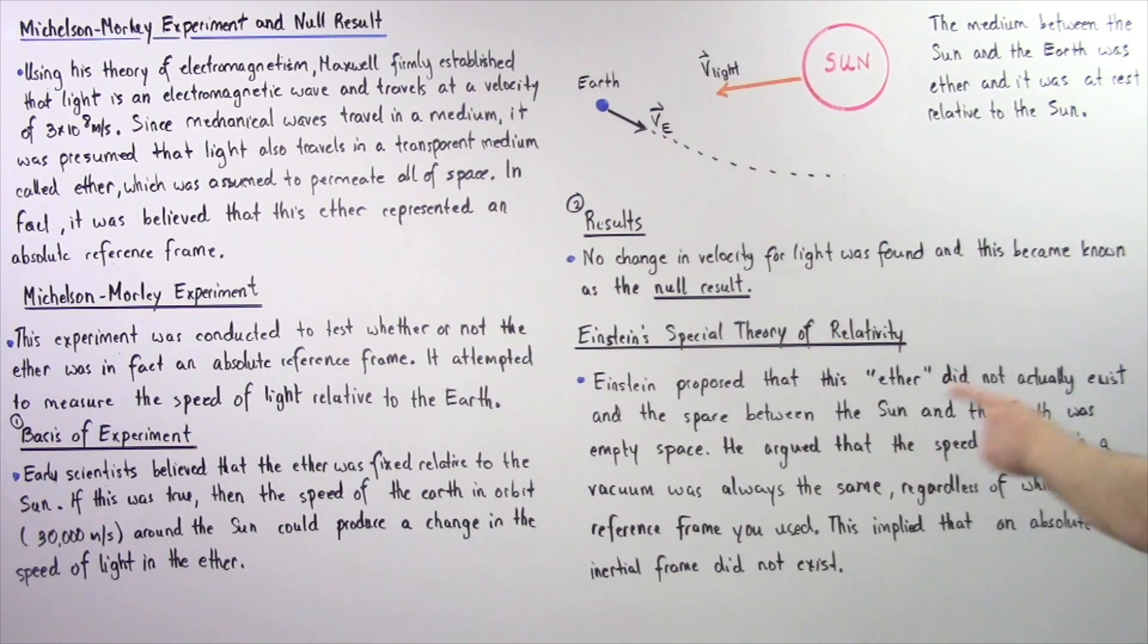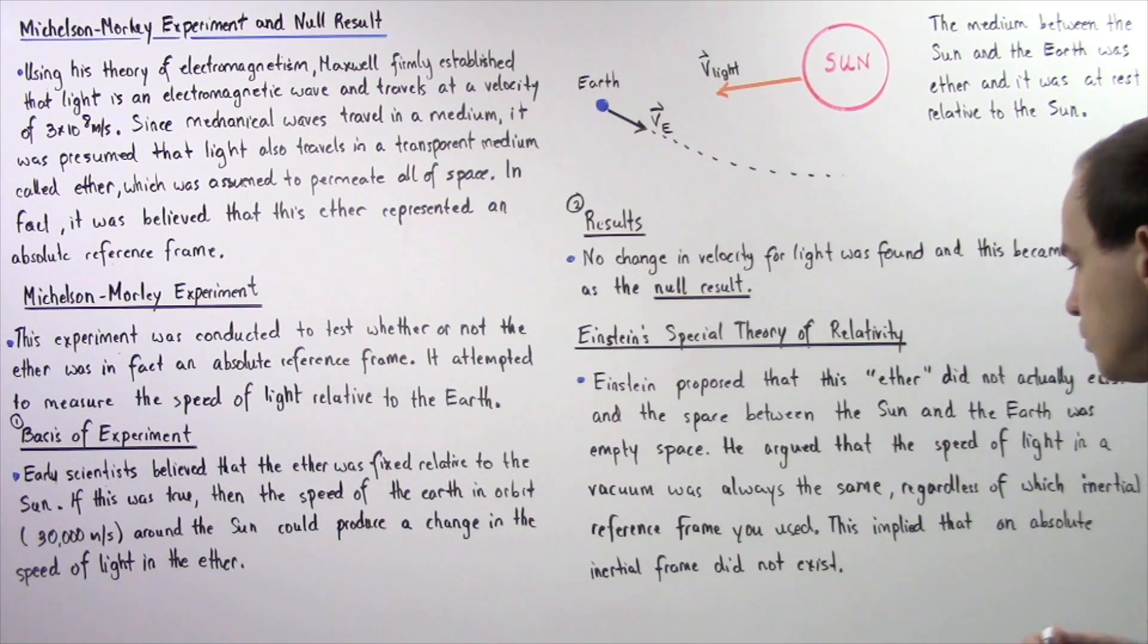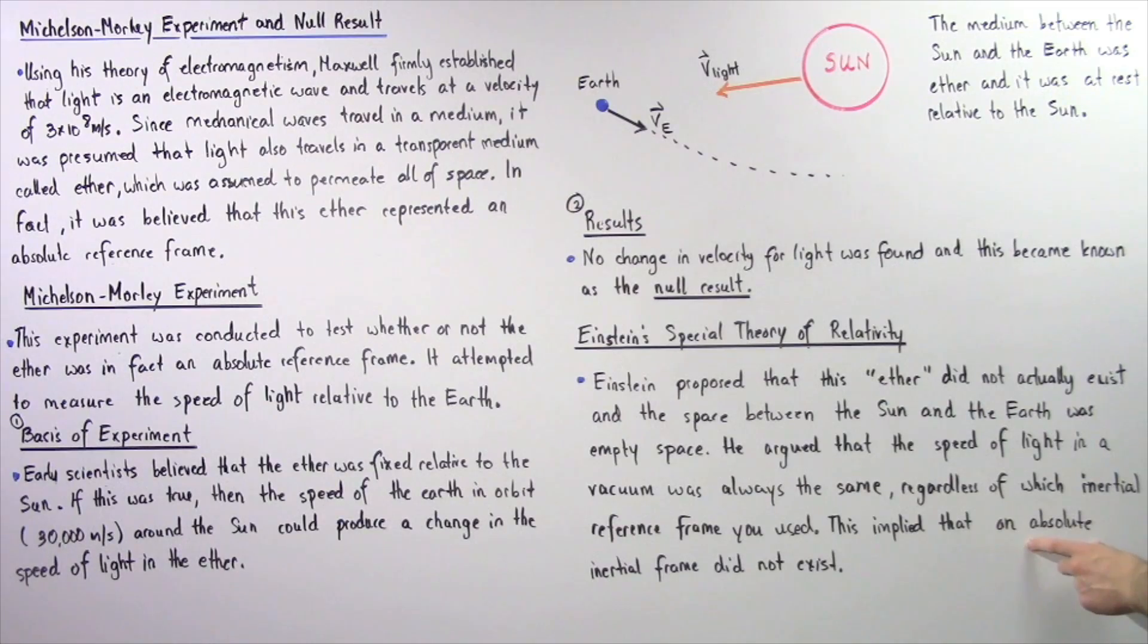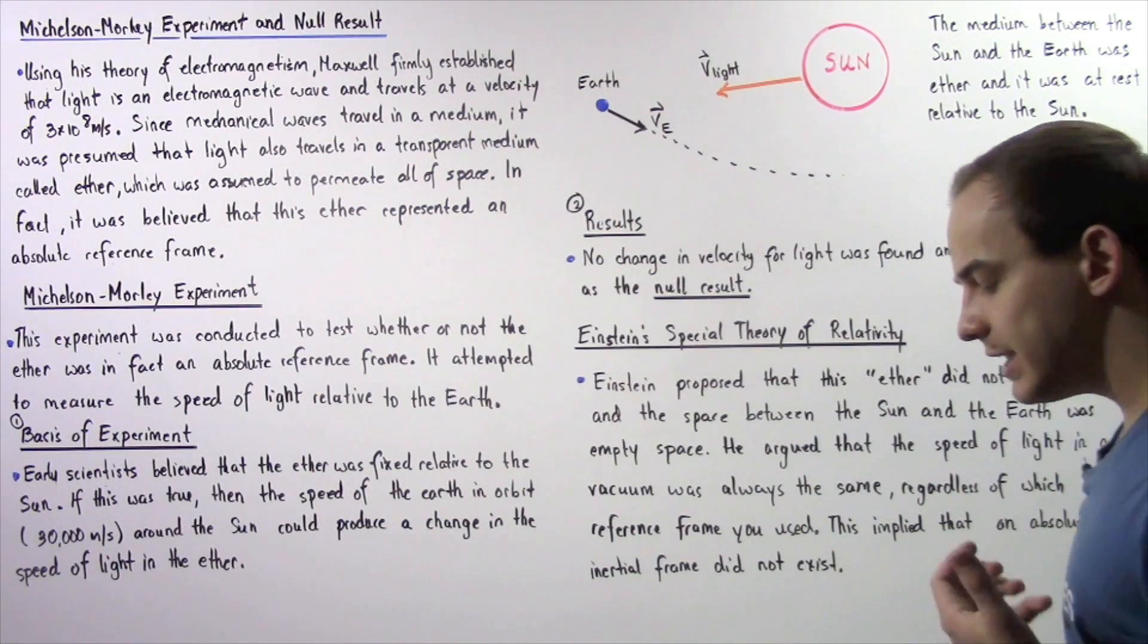He argued that the speed of light in a vacuum was always the same, regardless of which inertial reference frame we are using. And this basically implied that an absolute inertial reference frame did not actually exist.